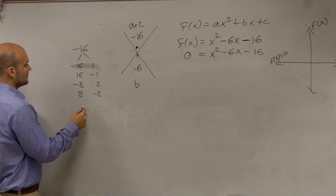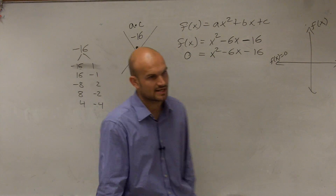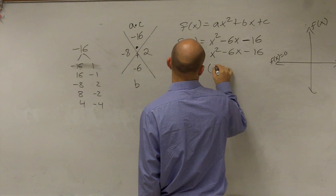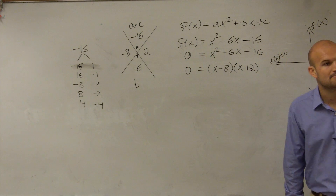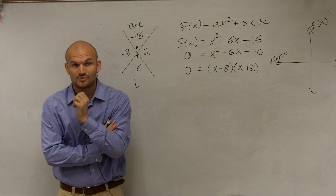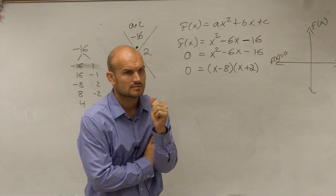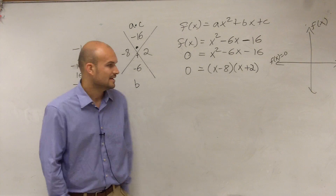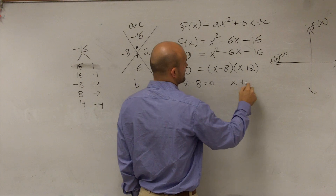So, which one of these factor pairs multiply to give you negative 16 and also add to give you negative 6? Negative 8 and 2. Then I rewrite my problem as a product of two factors — as a multiplication problem. The reason is that if this times this equals zero, then one of them has to equal zero, so we can set it up into two separate equations.